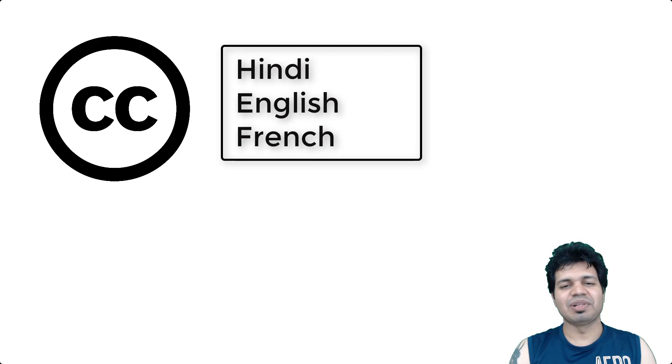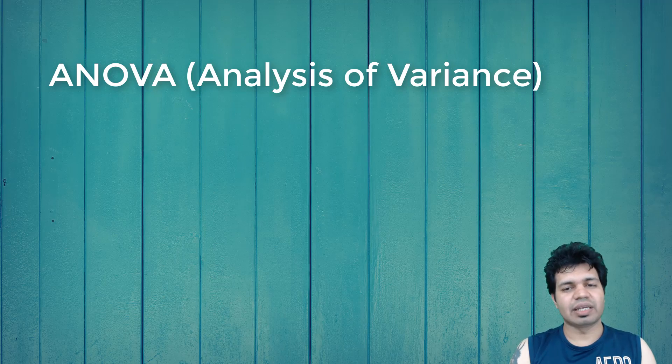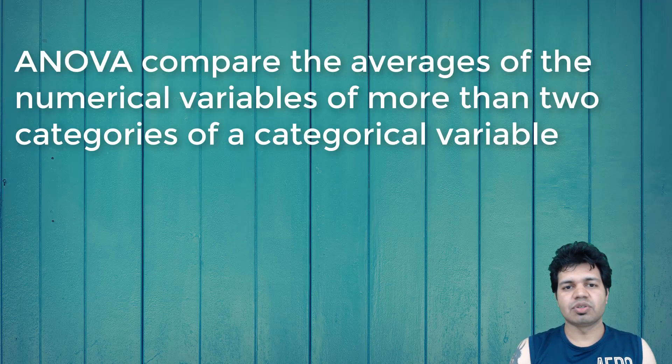So what is ANOVA? ANOVA analyzes more than two groups and tries to assess whether the means or averages of more than two groups are statistically different from each other. If you remember, in Z-statistics and T-statistics we compare the averages of two groups, but here we are comparing more than two groups. This analysis can be utilized to compare averages of numerical variables across more than two categories of a categorical variable.